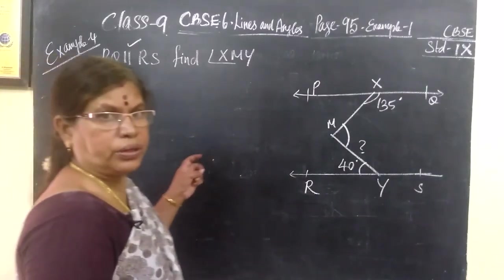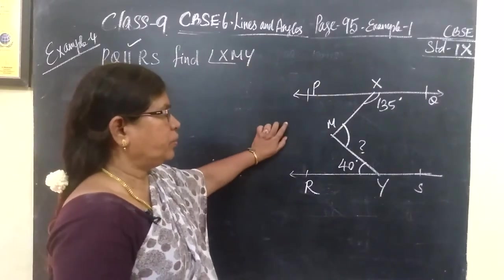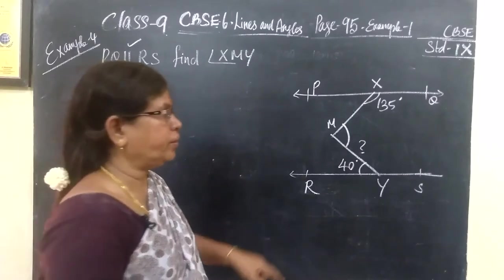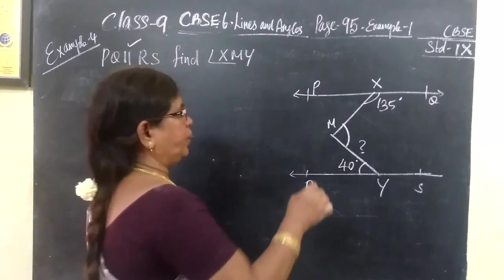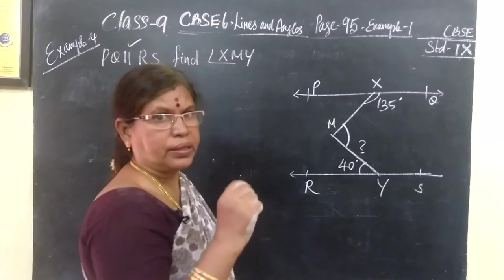Hello students, now we see example 4. In the adjoining figure, you are given two parallel lines P, Q and R, S, and the angles that are mentioned. You have to find F, M, Y. What to find? F, M, Y.